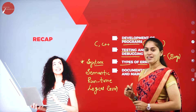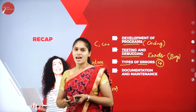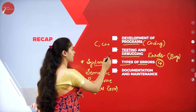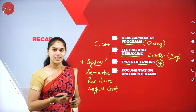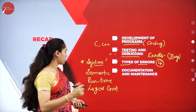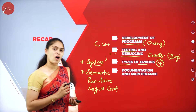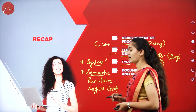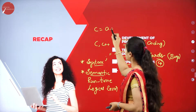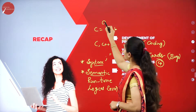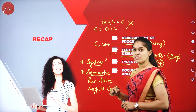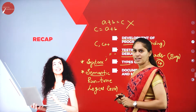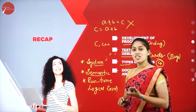A syntax error occurs due to grammatical mistakes while writing a program, such as a missing semicolon or missing double quotes. A semantic error results from wrong or improper usage of statements — for example, writing an incorrect assignment like c = a + b when the logic requires something else.